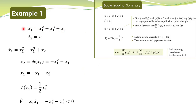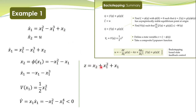Once we have this, we proceed to the next step — we consider the overall system and define a state transformation. That state transformation is written over here: z equals xi minus phi of eta, that is, z equals x2 minus phi of eta. The negative signs cancel out accordingly, giving us z.